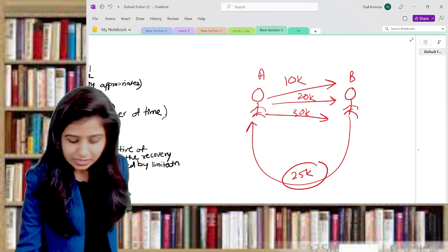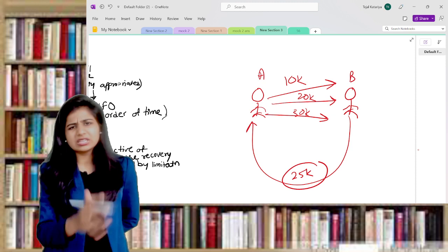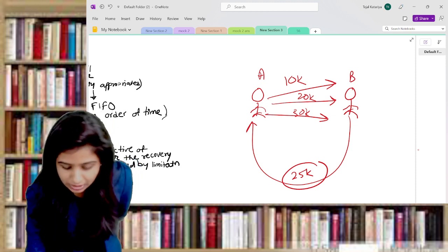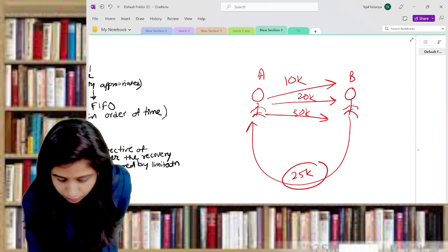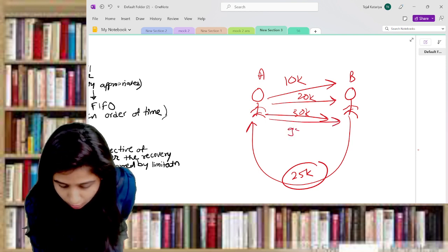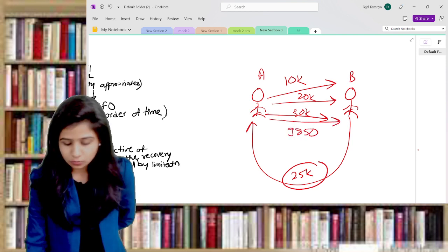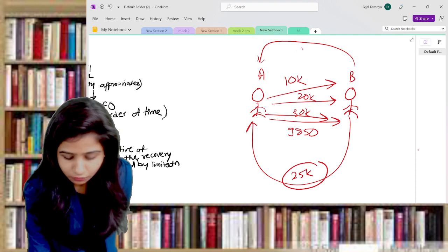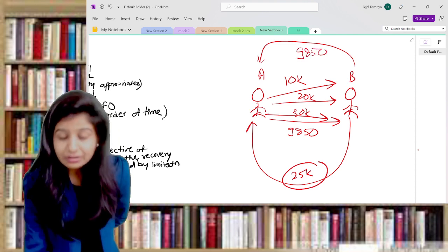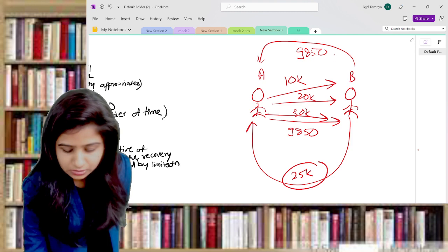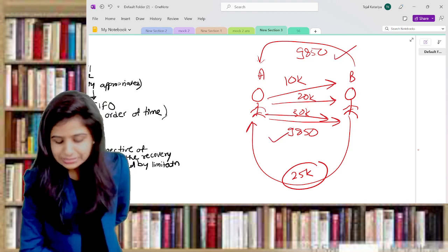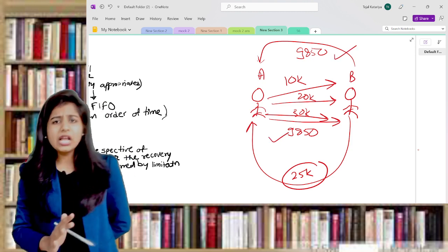B will expressly tell A that these 25,000 you must apply against 10k or 20k or 30k as the case may be. Or the second situation, if another payment is there of amount 9,850 and B is giving a check worth rupees 9,850, then it is very obvious that these 9,850 should apply against these 9,850.